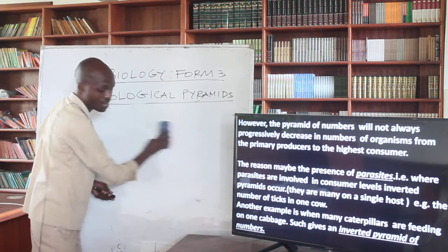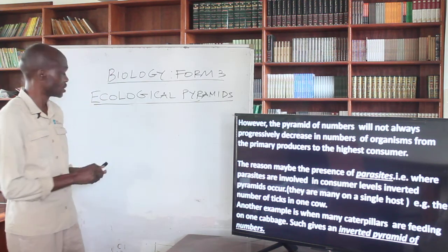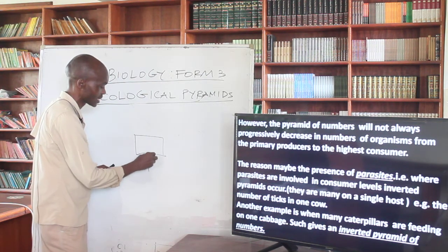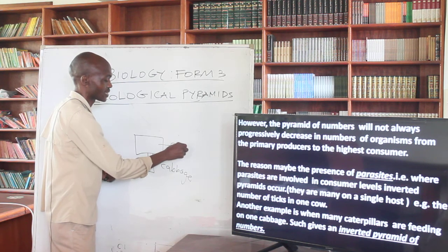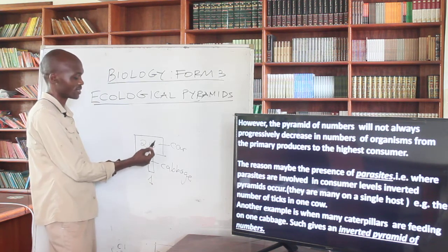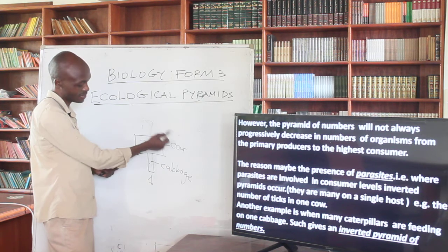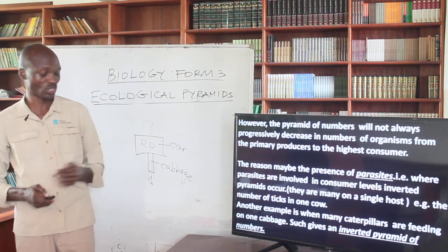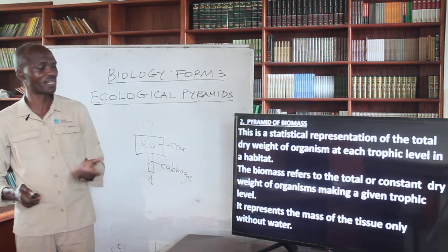Another example is a number of caterpillars feeding on a single cabbage. You may have around 20 caterpillars feeding on just one cabbage. This is contrary to what you might expect, and is actually an inverted pyramid. So not all cases will give you the normal distribution of numbers that produces the standard pyramid shape we expect.